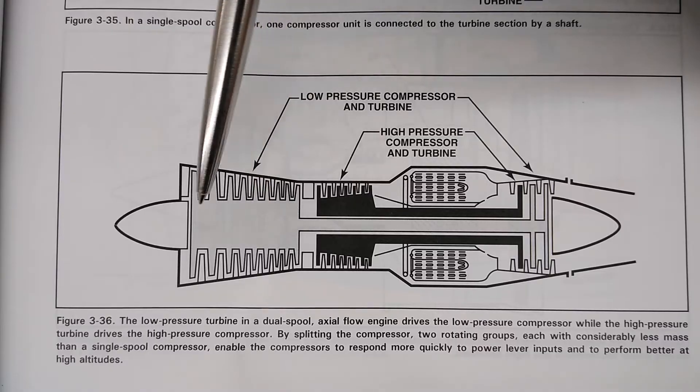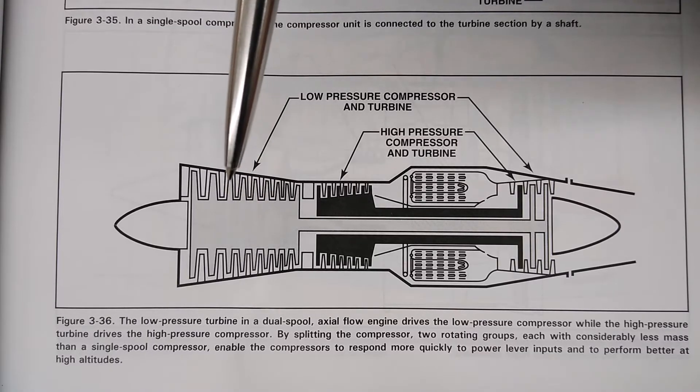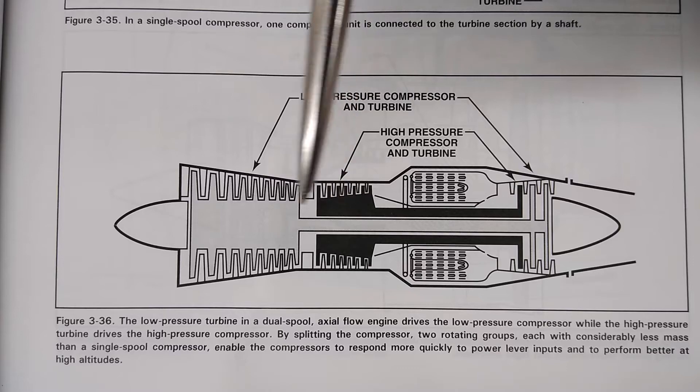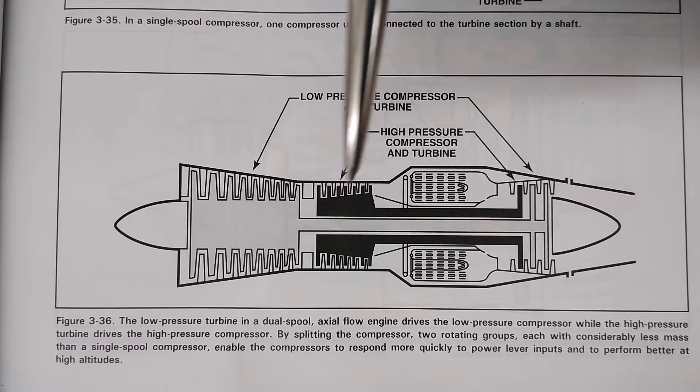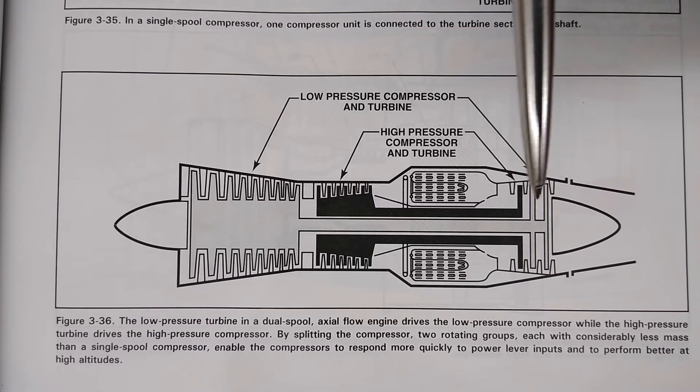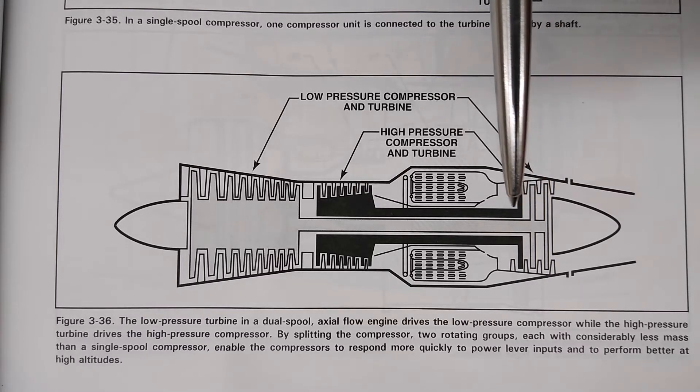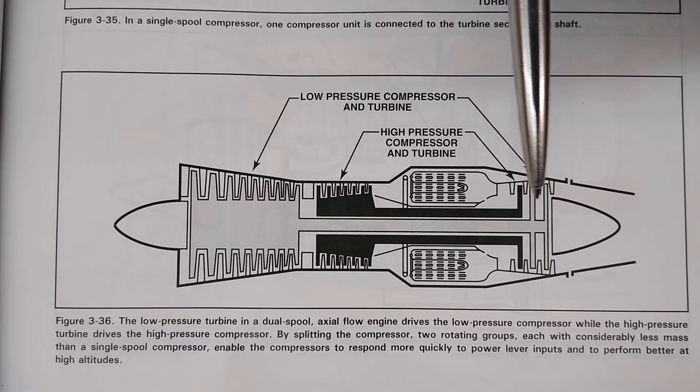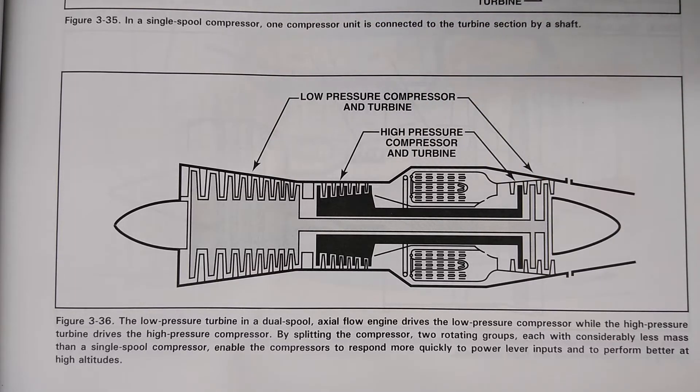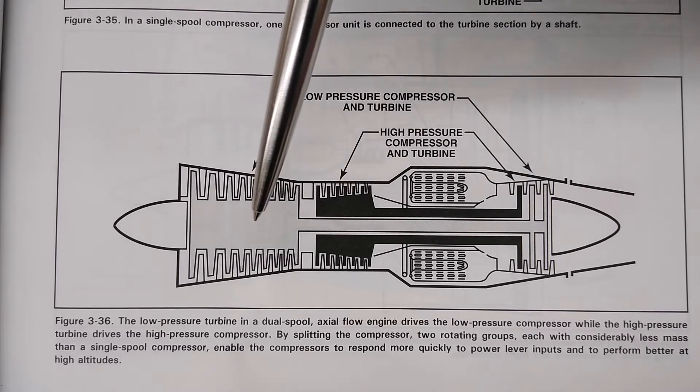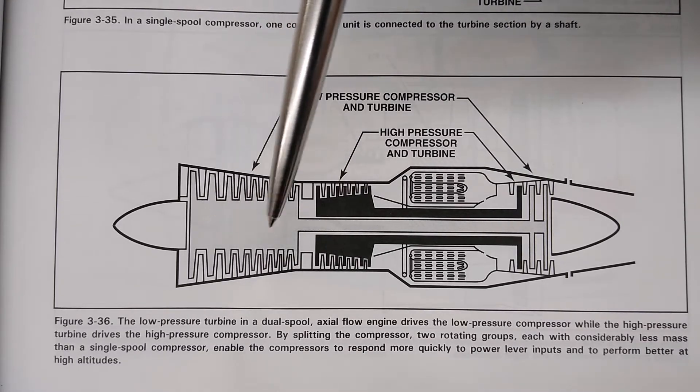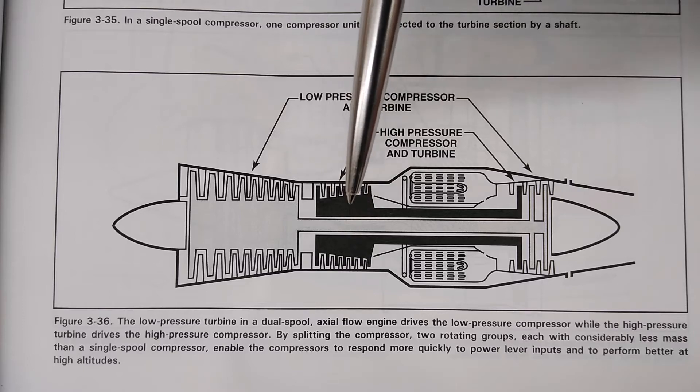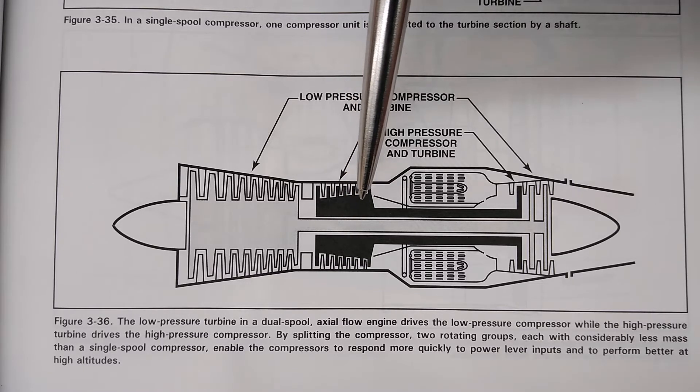That allows the black spool to spin at a different speed than the gray spool. Now, this compressor is running at a lower air pressure than this compressor. So now you see that in this case, we have two compressors. We also have two sets of turbines, two different spools of turbines, two different assemblies. This turbine is independent from these two, spinning at different speeds because they're driving different parts of the engine.